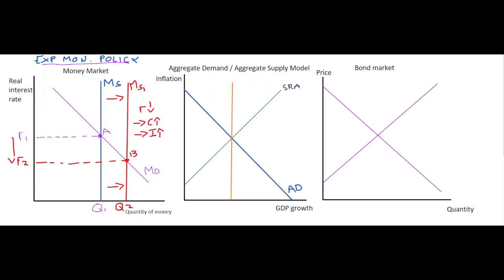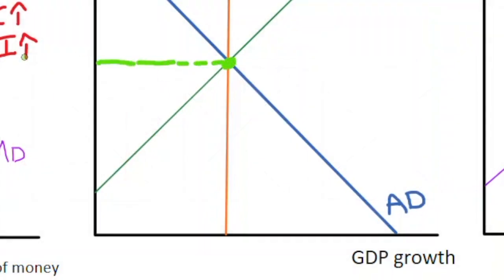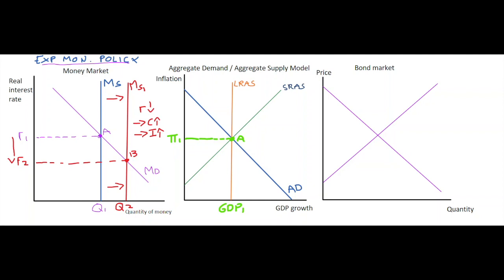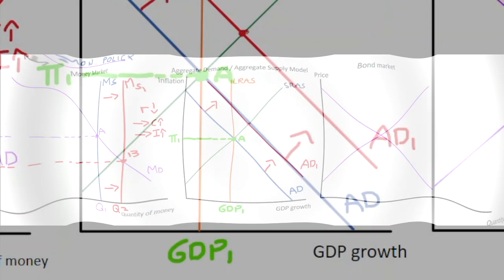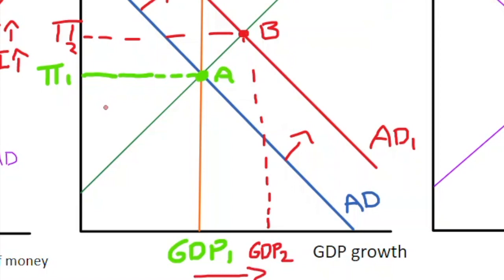This model shows AD as a downward sloping line, a positively sloped short-run aggregate supply curve, and a long-run aggregate supply curve representing the potential output of the economy. The equilibrium between these three shows potential output with an inflation rate of inflation1 and a GDP growth rate of GDP1 — we call that point A. Because of the expansionary monetary policy, consumption and investment have increased, represented by a rightward shift of the aggregate demand curve to AD1, giving a new short-run equilibrium at point B where the inflation rate rises to inflation2 and real GDP rises in the short run.